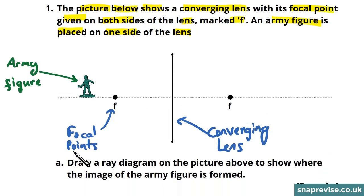In the first part of our question we are asked to draw a ray diagram on the picture above to show where the image of the army figure will be formed. So there's a couple of different rays we can draw to figure this out.